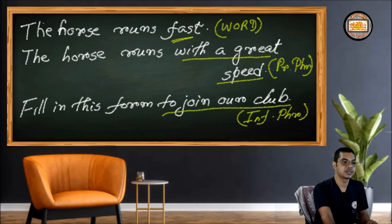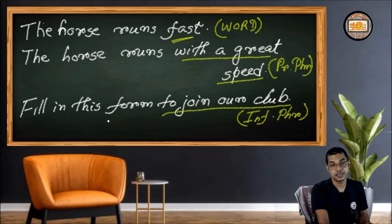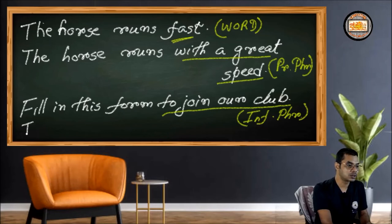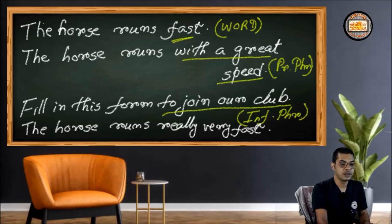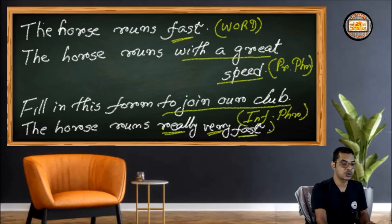Now, how can an intensifier create an adverbial? Using the same sentence: 'The horse runs really very fast.' Here 'fast' is the adverb, modified by 'very' and further by 'really.' Together, 'really very fast' is an adverb phrase with an intensifier — and this is also an adverbial.